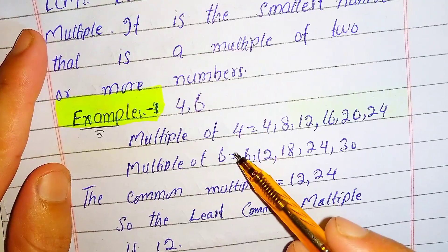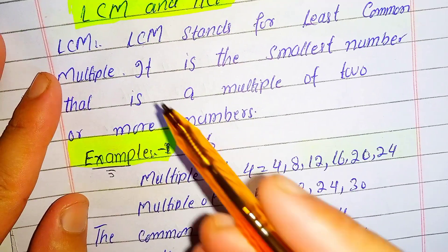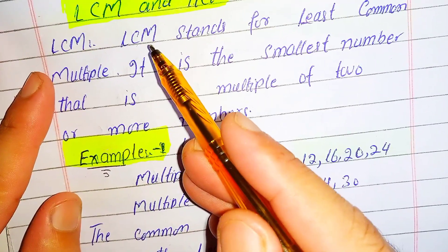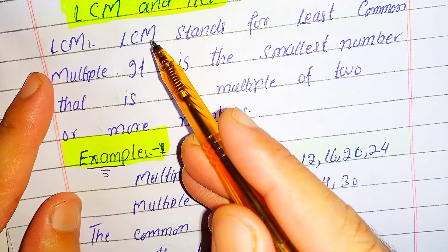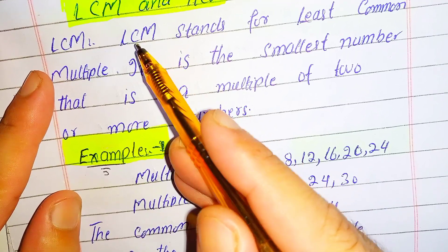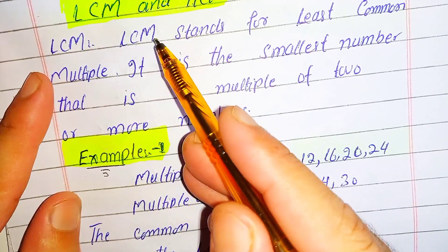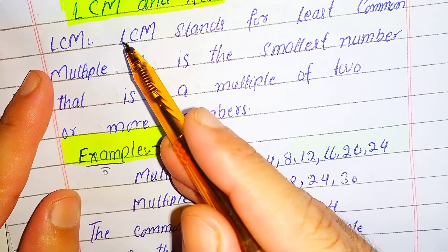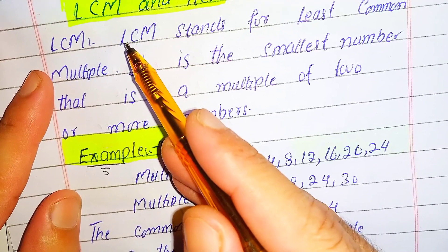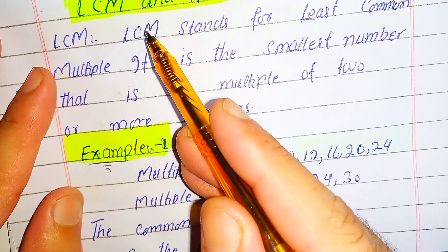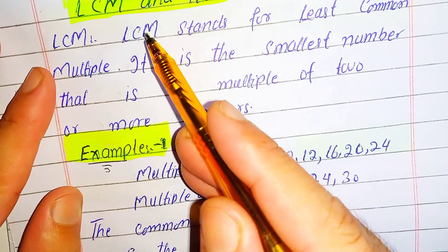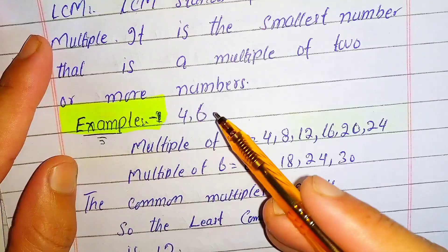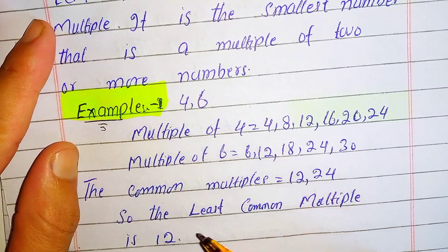From this procedure we recognize that to find the LCM of two or more numbers, first we have to find the multiples of these numbers, then find the common multiples, and then find the least number among them — that will be the LCM. Just like the LCM of 4 and 6 is 12.